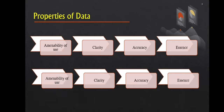We now go to the four different properties of data: amenability of use, clarity, accuracy, and essence. First, amenability of use — according to the dictionary definition, data are facts used to make decisions. In other words, data are intended to be used as a foundation for drawing conclusive conclusions. If they are not suitable for use, they are not needed. The application can vary depending on the situation, but data's usability remains a distinguishing feature.